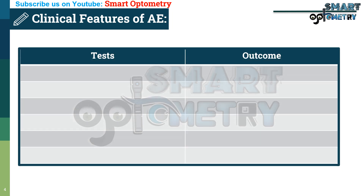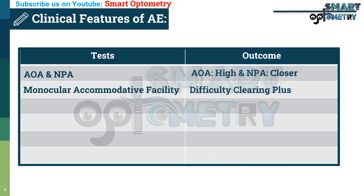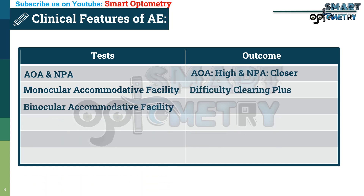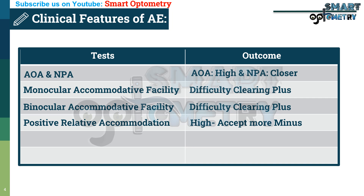Now let's see the signs of accommodative excess. 1. Amplitude of accommodation will be high and near point of accommodation will be closer. 2. In monocular accommodative facility, the patient will face difficulty in clearing the plus lens. 3. In binocular accommodative facility also, the patient will face difficulty in clearing the plus lens. 4. In positive relative accommodation, the patient will face difficulty in clearing the plus lens — it will be high.